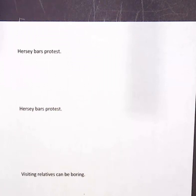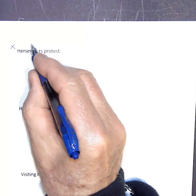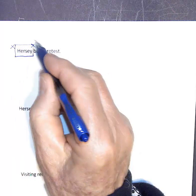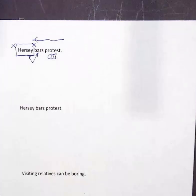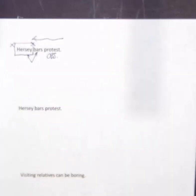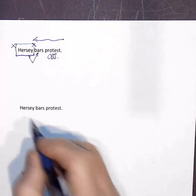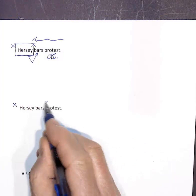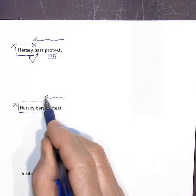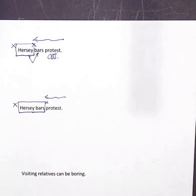'Hershey bars protest.' First interpretation: 'Hershey' is the subject, 'bars' is the verb, and 'protest' is the object — meaning Hershey bars or stops any kind of protest, perhaps with guards at the gate. Second interpretation: 'Hershey bars' is the subject and 'protest' is the verb — now the chocolate bars themselves are the ones doing the protesting.